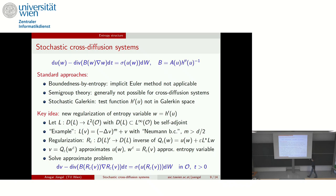So we need something new, and this is the key of this presentation. We have used a new regularization to deal with these issues. The idea is that we regularize the entropy variable, since the entropy variable should be in a good space — in fact in L-infinity — in order to make all these pointwise transformations back and forth.